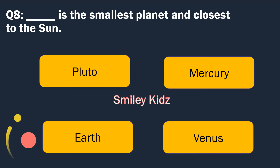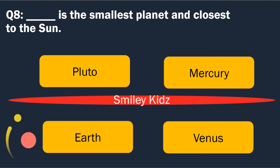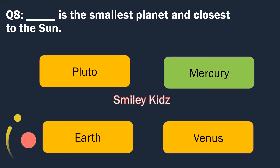Question number 8. Blank is the smallest planet and closest to the sun. Options are: Pluto, Mercury, Earth and Venus. The right answer is Mercury. Mercury is the smallest planet and closest to the sun.